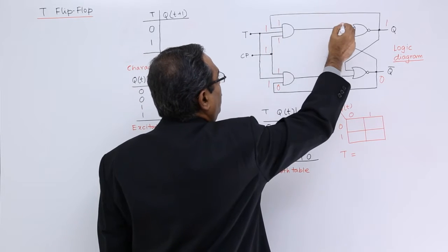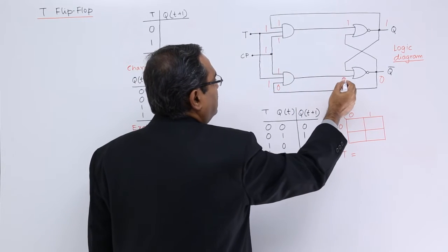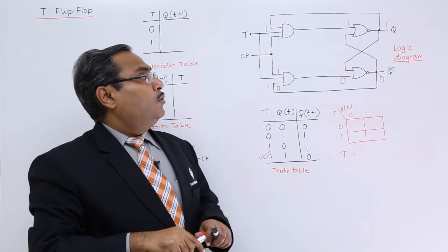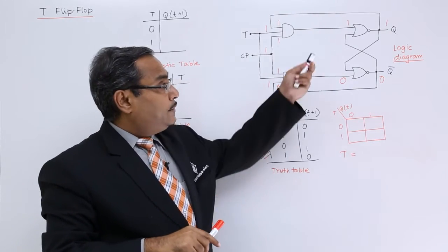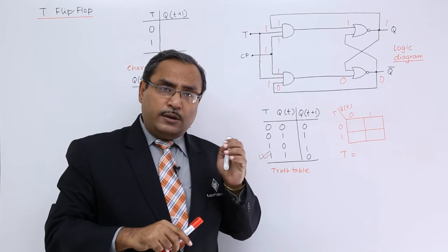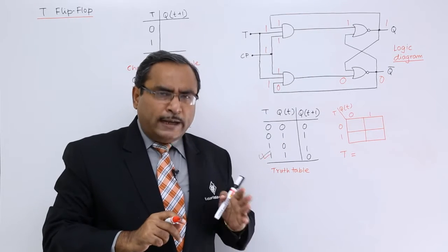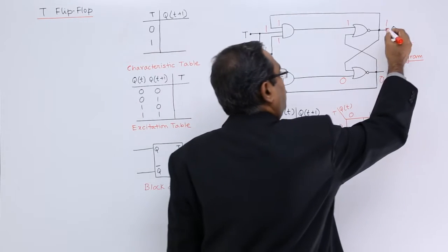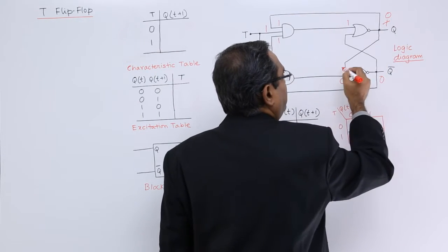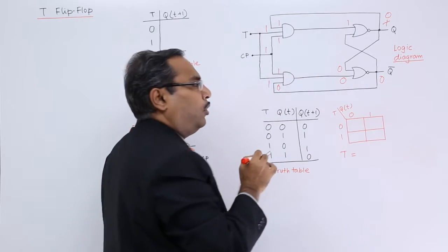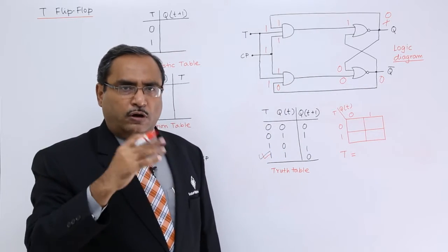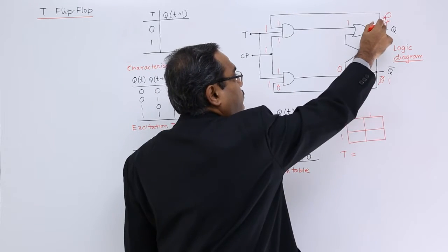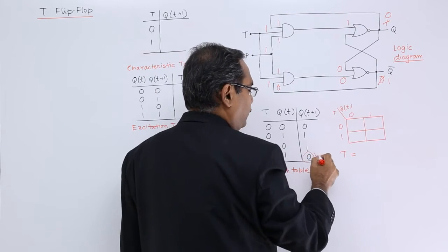1 AND 1 is 1, and 1 AND 0 means output will be 0 in case of the AND gate. Now I am getting 1 as input to the NOR gate. Whenever a NOR gate is getting 1 as one of its inputs, the output will always be 0. This 0 is coming down, and 0 NOR 0 equals 0; the complement of that gives 1 here. So Q bar is getting 1, and therefore Q is getting 0 — and that has been proved.